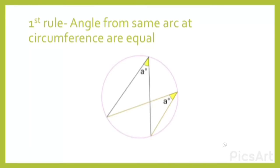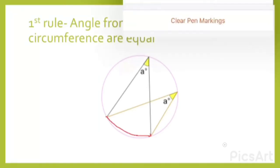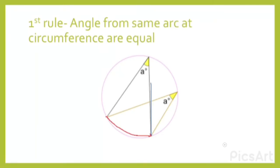For the first theorem: angles from the same arc touch the circumference at different points, but because they come from the same arc, those angles are equal. For example, if one angle is 40 degrees, then the other angle from the same arc at the circumference will also be 40 degrees.